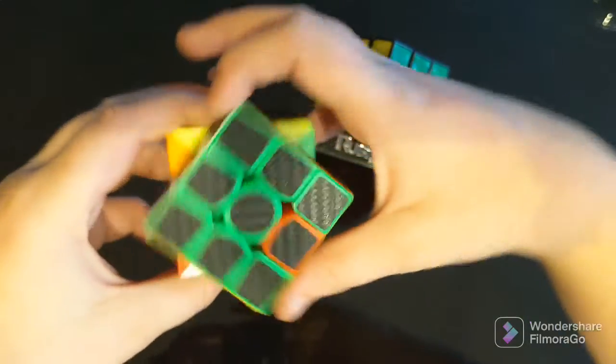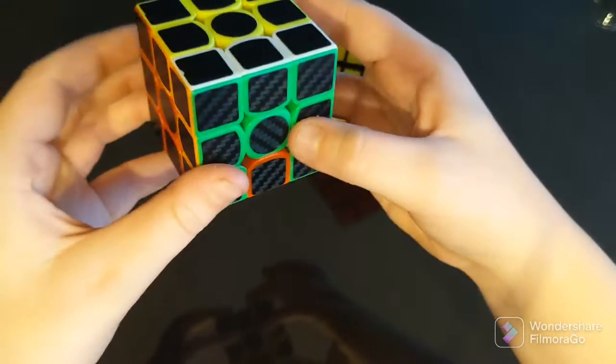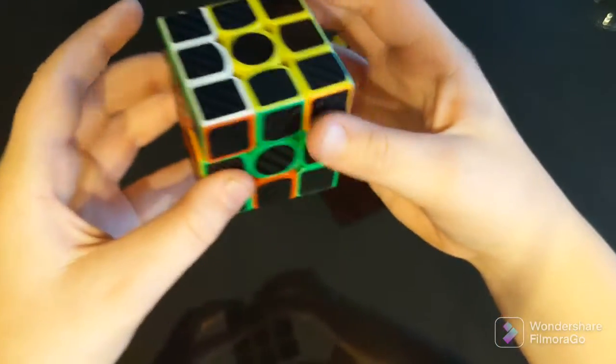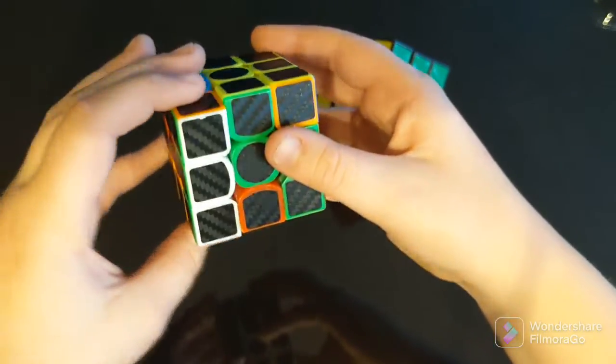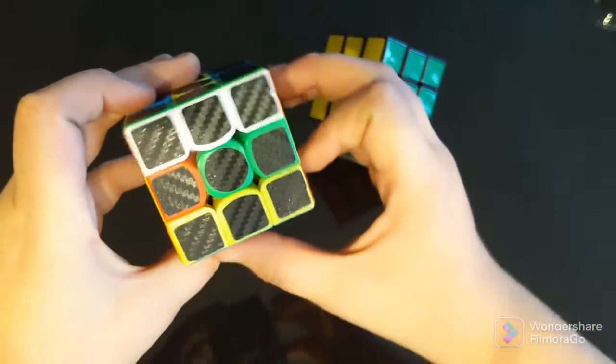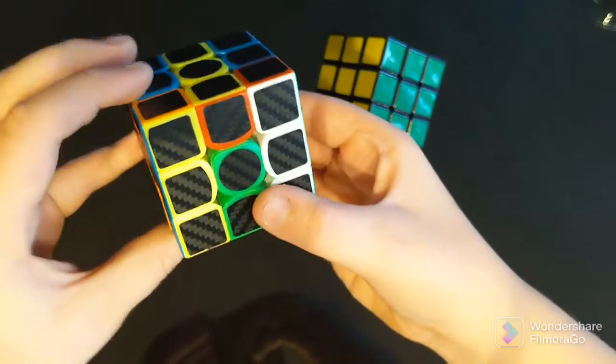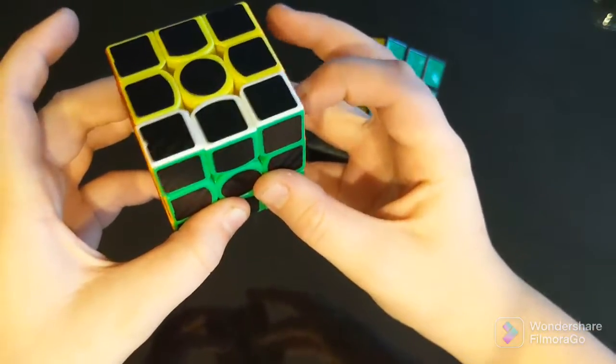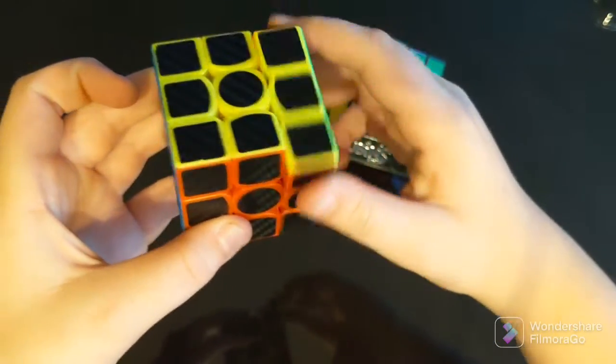Once again you twist it like this twice. Then for me I'm going to twist it this way, you might twist it that way. I'm going to twist it this way. There you go, down down and up up like that. Up up side and just twist it and boom, you have solved it. You have finally solved the Rubik's cube.